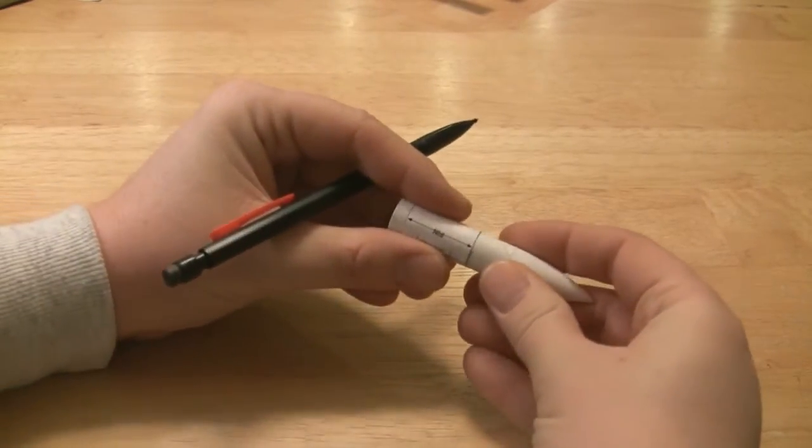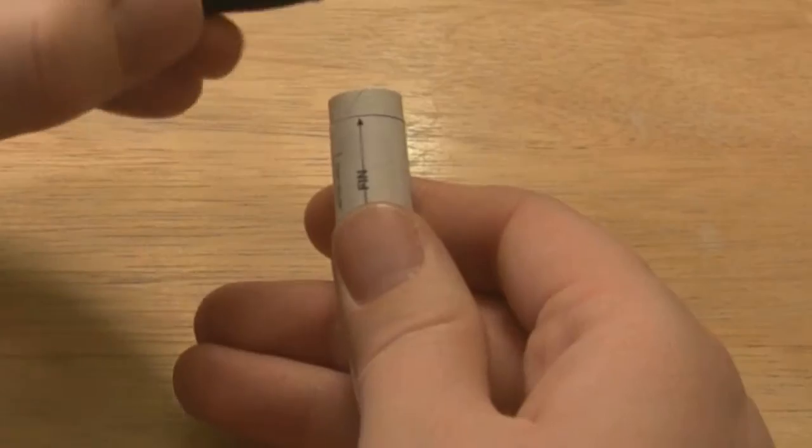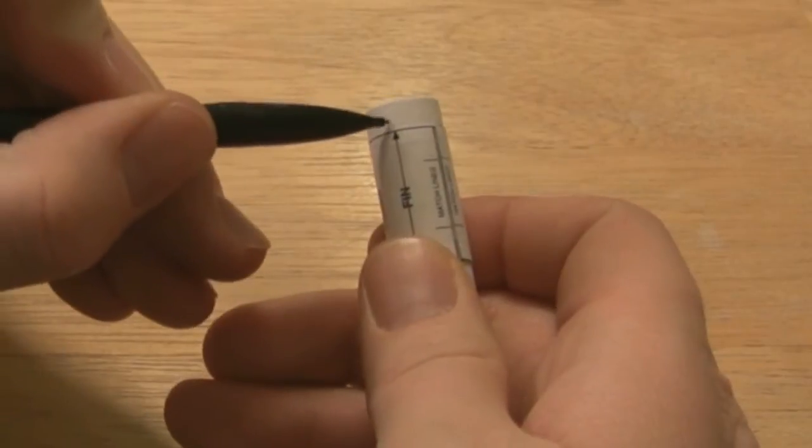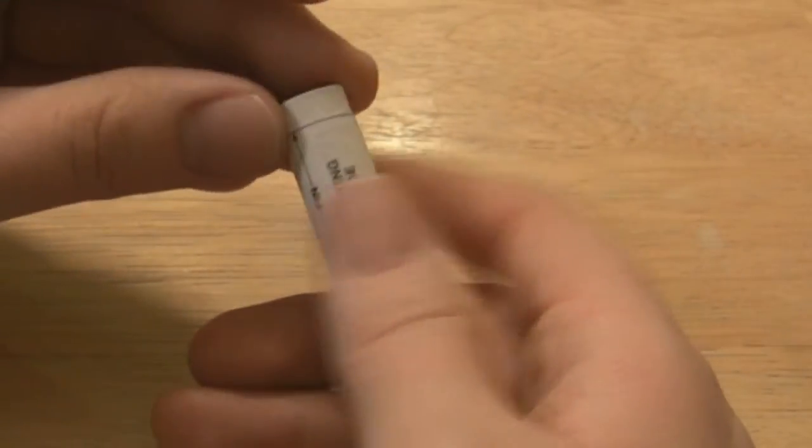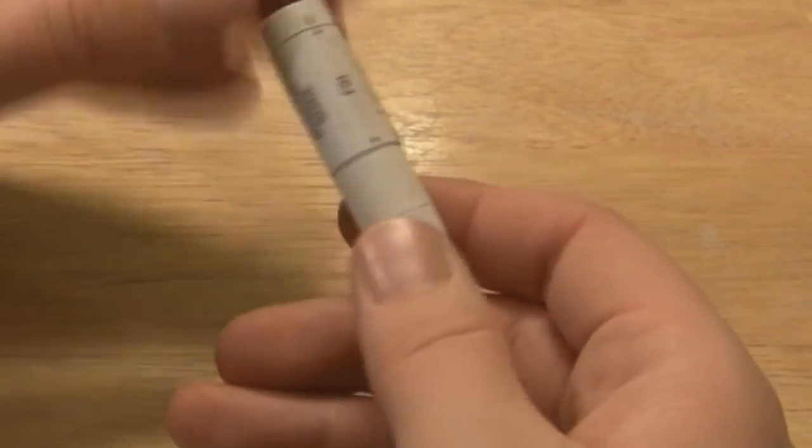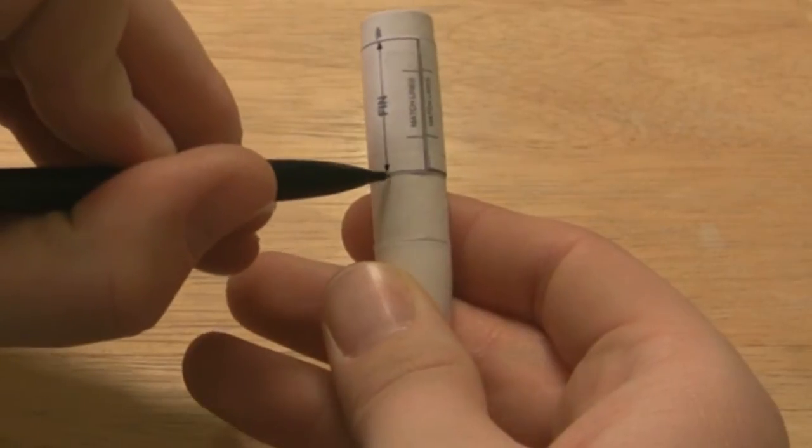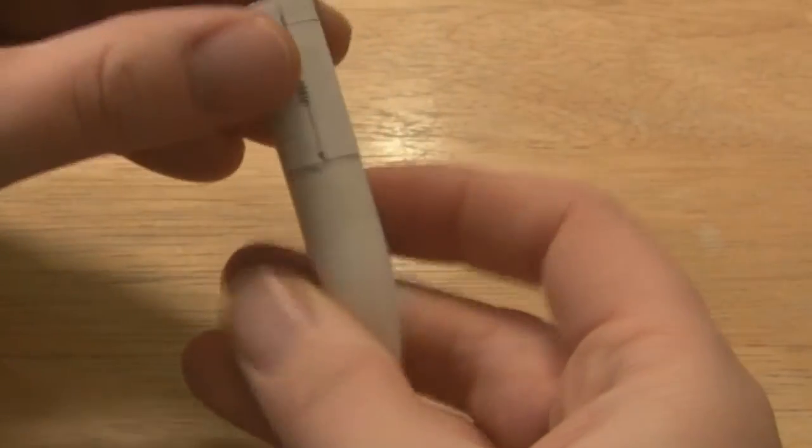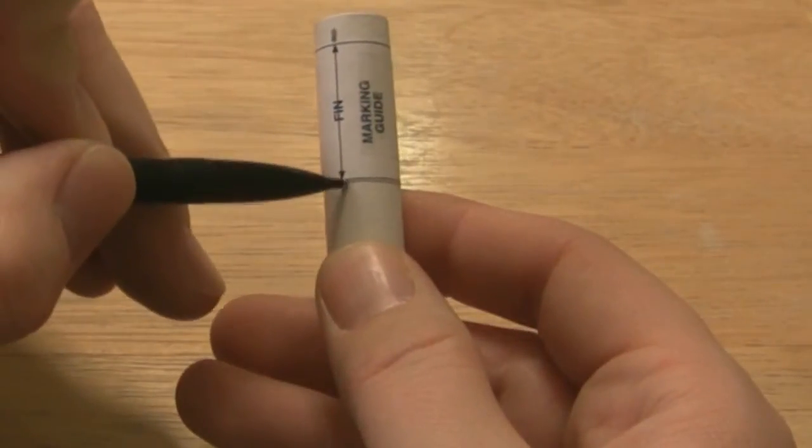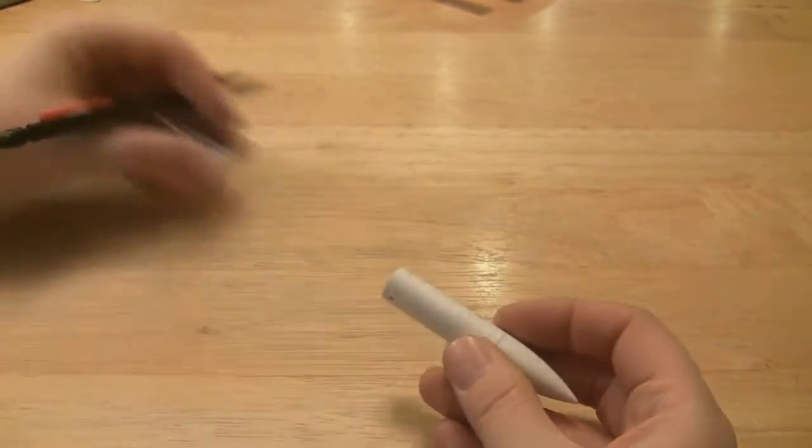Next what we're gonna do is move the jig up a little bit and with the pencil I'm gonna mark where it says fin. Sometimes you get a mark for a launch lug. What I'll do is I'll put an LL just so I know that that's not a fin, that's the launch lug. You mark on the front part and the back part. Okay, three marks on each side.